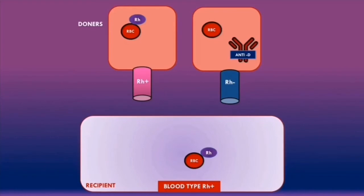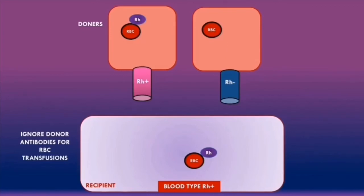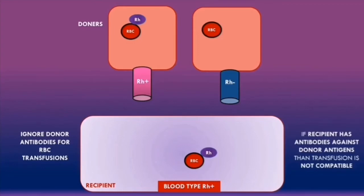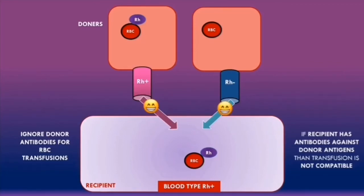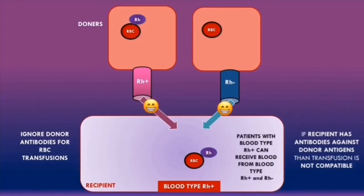The same principles for ABO compatibility apply here. We ignore donor antibodies for red blood cell transfusions because they become diluted in the recipient's plasma. If a rhesus positive recipient receives rhesus positive blood, this is compatible because the recipient has no anti-D antibodies. If the recipient receives rhesus negative blood, this is also compatible because there is no risk of a hemolytic transfusion reaction. In summary, patients who are rhesus positive can receive both rhesus positive and rhesus negative blood.